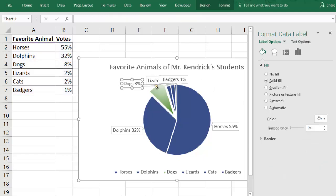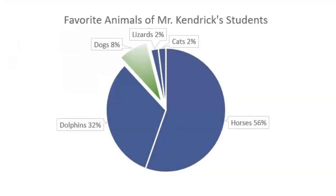So that is how you create a pie chart. If you want a head start on creating your own chart, you can look in the description for a link to download this file. Check out our video for making a pie chart in Google Sheets, and subscribe to our channel for more charts and how-to videos in both Google Sheets and Excel.